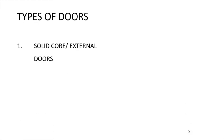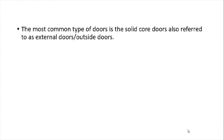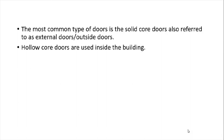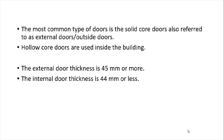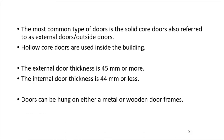Types of doors — there are several types, but at our level we look at solid core or external doors, and hollow core or internal doors. The most common type is the solid core, also referred to as external or outside doors. Hollow core doors are used inside the building. The external door thickness is normally 45 millimetres or more, while the internal door thickness is normally below 44 millimetres. Doors can be hung on either a metal or a wooden door frame.